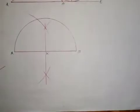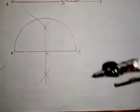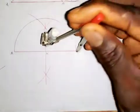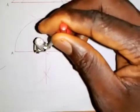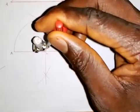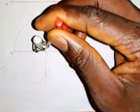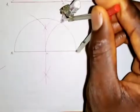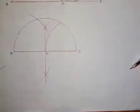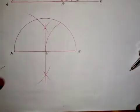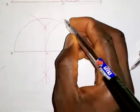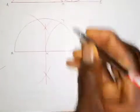Next I put the pin point on my compass at B, extending it to point X, then I draw an arc. This arc touches the semicircle at a point, which I will call point Y.